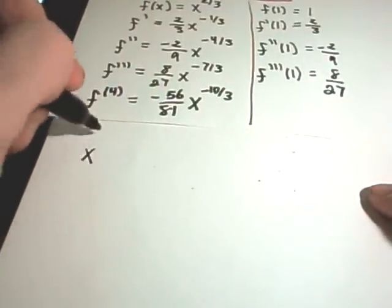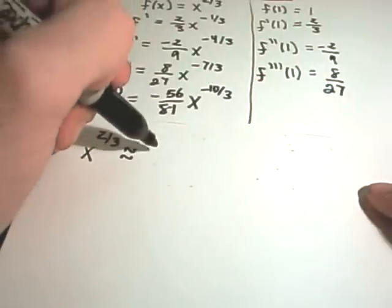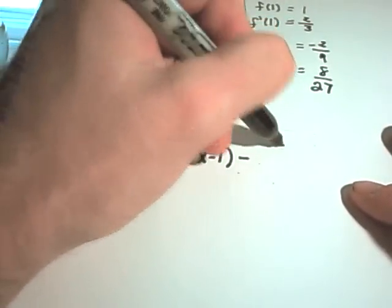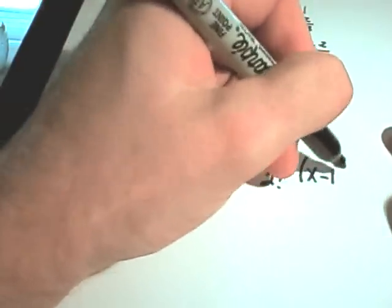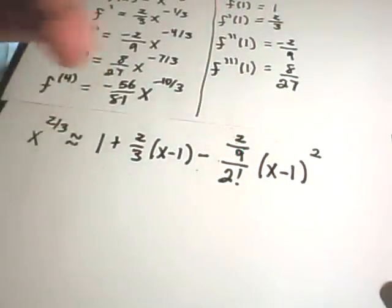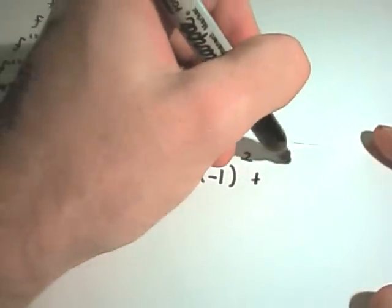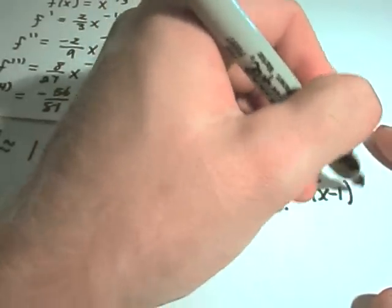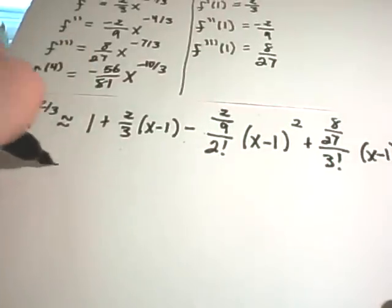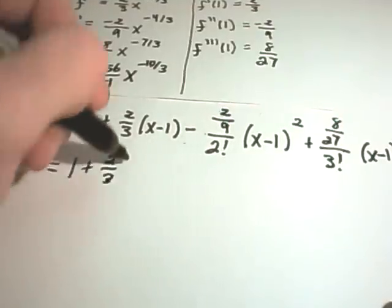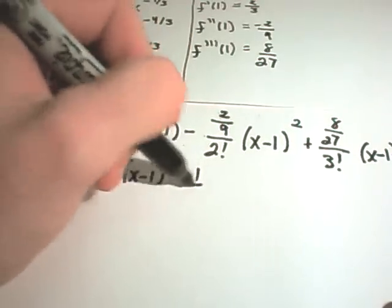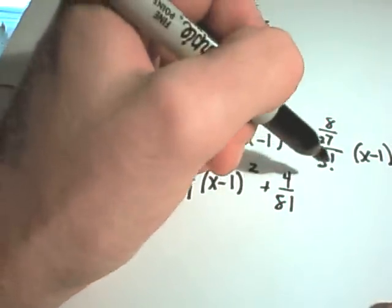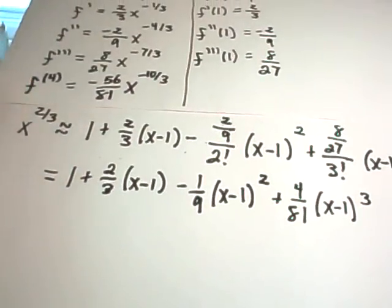Writing out the Taylor polynomial: x to the two-thirds is approximately equal to one, plus two-thirds times x minus one, minus two-ninths over two factorial times x minus one squared, plus eight over 27 divided by three factorial times x minus one cubed. Simplifying, this is one plus two-thirds times x minus one, minus one-ninth times x minus one squared, plus four over 81 times x minus one to the third power. So there's our third-degree Taylor polynomial.